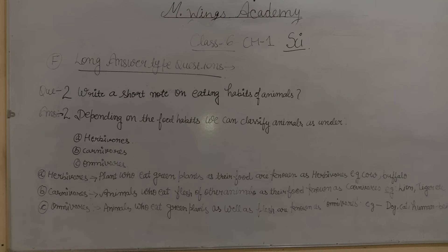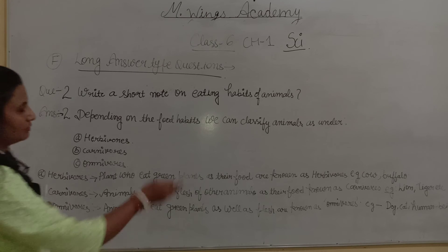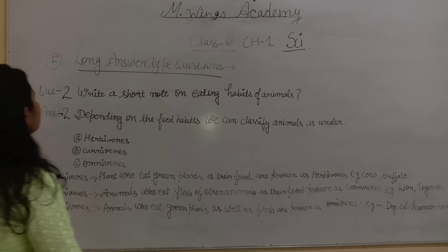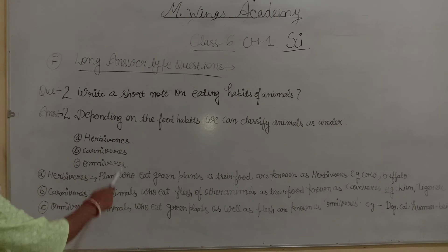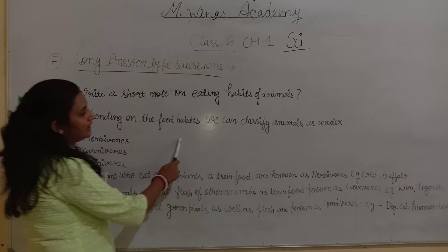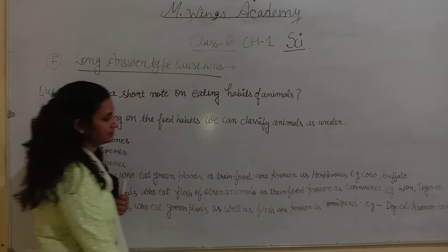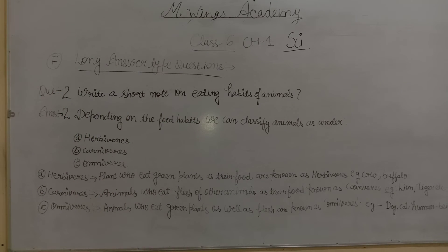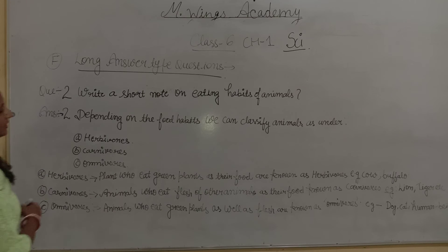Class 6, your question number 2: write a short note on eating habits of animals. The answer I have written below, I will explain it to you. Depending on their food habits, we can classify animals as under — we have divided them into three categories: herbivorous, carnivorous and omnivorous.